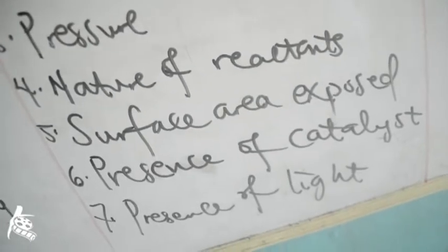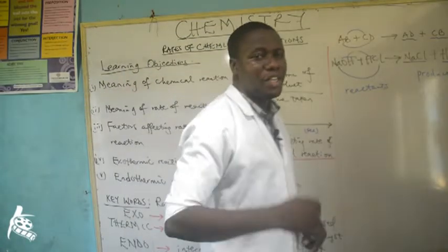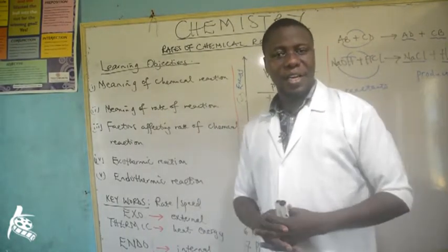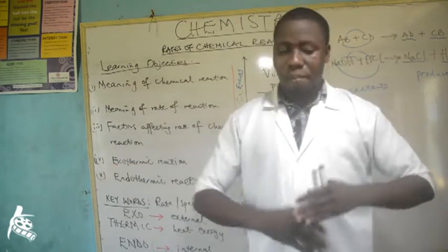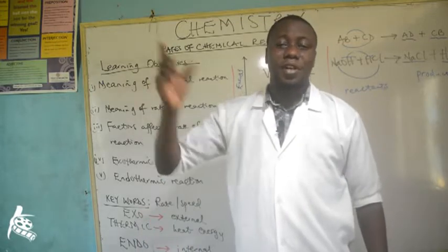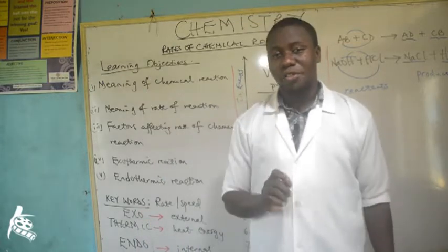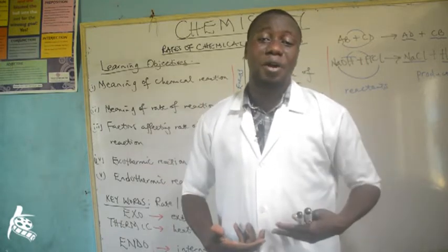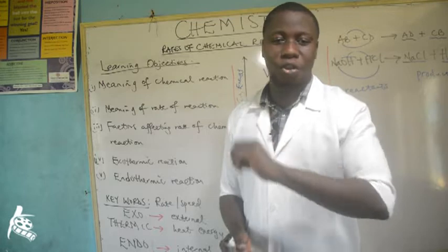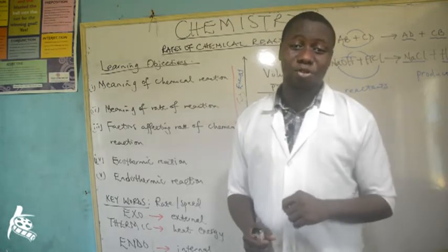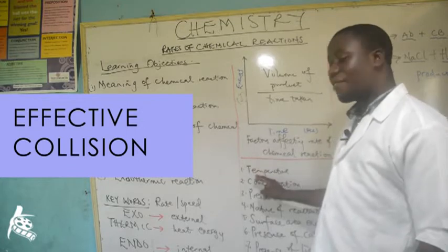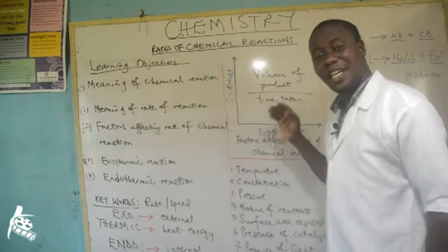In an attempt to explain temperature as a factor, I will need to remind ourselves about collision theory. According to kinetic theory, there is collision when particles collide together and this happens usually when there is increase in temperature. However, only a fraction of these collisions bring about a chemical reaction. That fraction is called effective collision. So collision theory states that for a chemical reaction to occur there must be an effective collision.